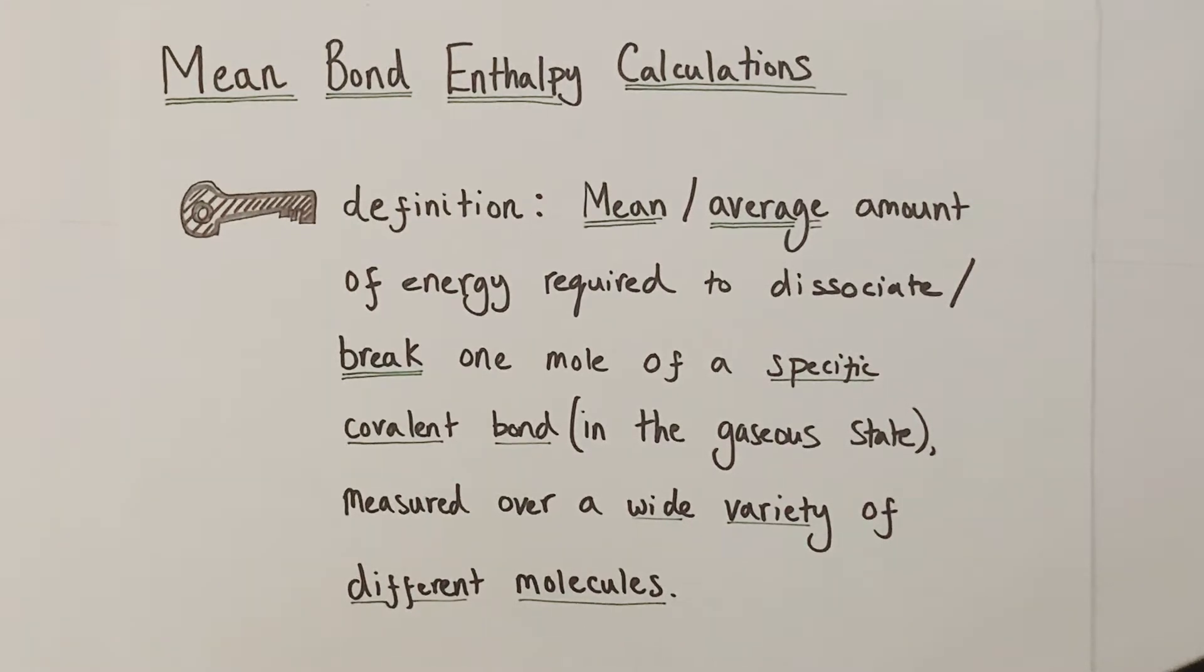The mean bond enthalpy is the average enthalpy of one mole of that covalent bond being broken, taking into consideration all the various environments you may find that particular bond in.